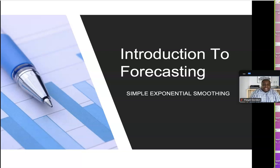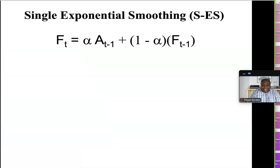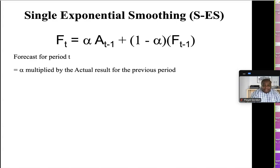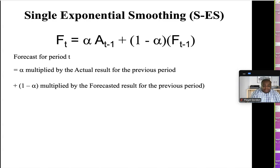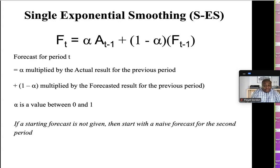Greetings everyone, welcome to part three of our forecasting series where we look at simple exponential smoothing, otherwise called single exponential smoothing (SES). Here's our formula: the forecast for period t is equal to alpha multiplied by the actual result for the previous period t minus one, plus one minus alpha multiplied by the forecasted result for the previous period t minus one. Alpha is our smoothing constant and it's a value between zero and one — a decimal.